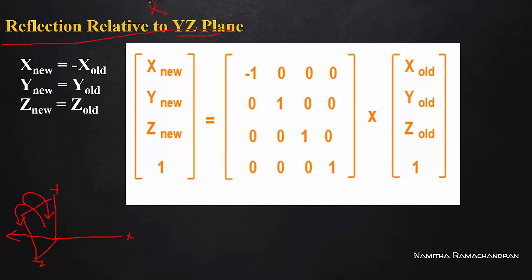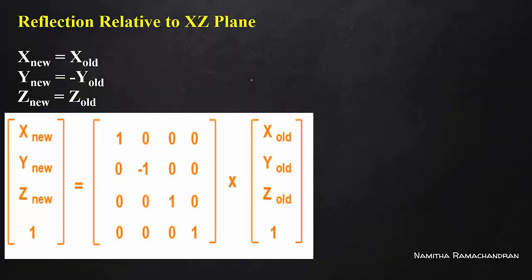What will happen in this case is we change the sign of x. x_new is minus x, y_new is y itself, z_new is z itself. The matrix formula will have minus sign in the x position, making x go to minus x, while the rest remains a unit matrix. This is the yz plane reflection, where x is negated.